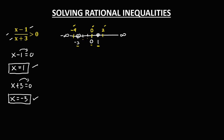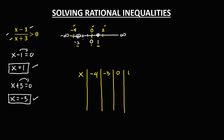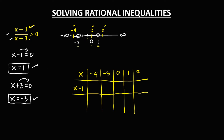Then put these numbers in a sign analysis table. For x, we have negative 4, then negative 3, then 0, then positive 1, and the last one, positive 2. Then for the numerator, x minus 1, and in the denominator, x plus 3, then the result. In the sign analysis table, starts with the critical values: negative 3 and positive 1.